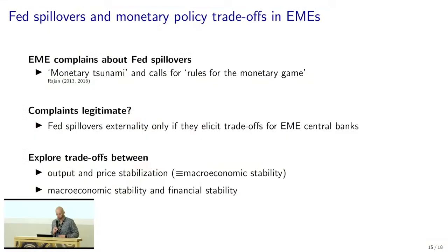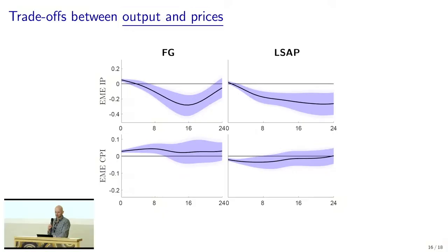What we do here is a fairly reduced-form, high-level perspective. We look at whether Fed monetary policy induces trade-offs or divergences in observed variables that emerging market central banks care about. We look at two types of trade-offs: trade-offs between output and price stabilization — which we label as macroeconomic stability — and trade-offs between macroeconomic stability on the one hand and financial stability on the other hand, which we measure by portfolio inflows.